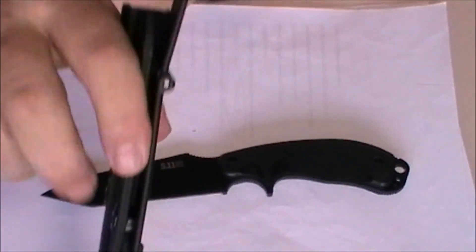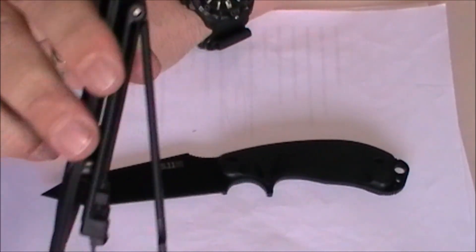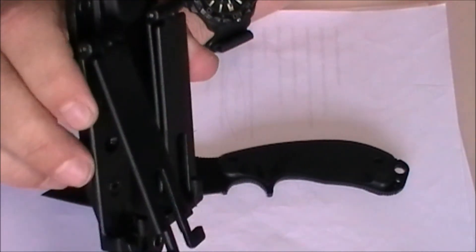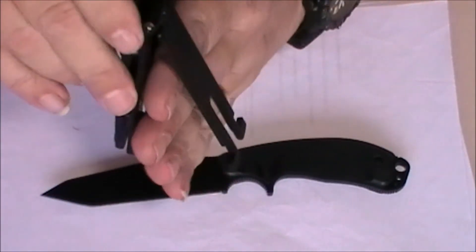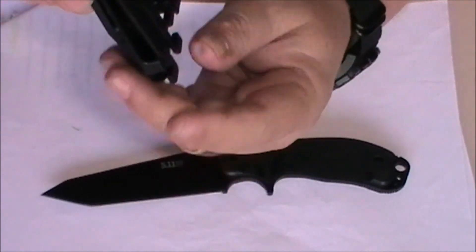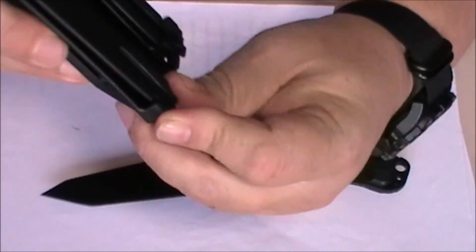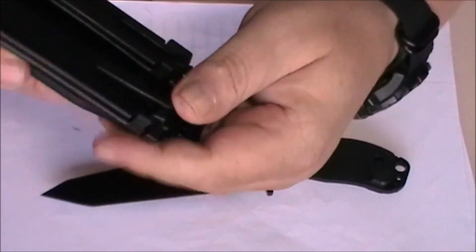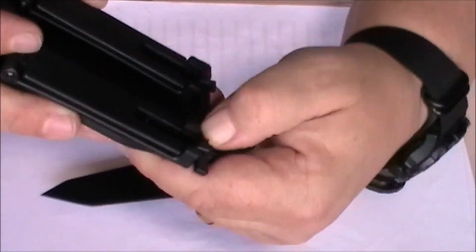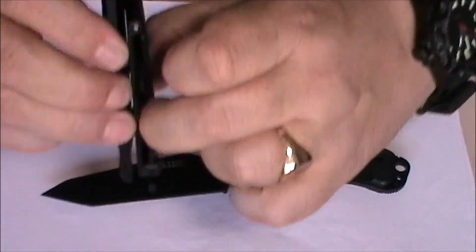Now you could do that with both of them. You can either attach this to your MOLLE webbing, or you could slide it over a belt and then reattach it down the bottom there, so that will pinch the belt in there.